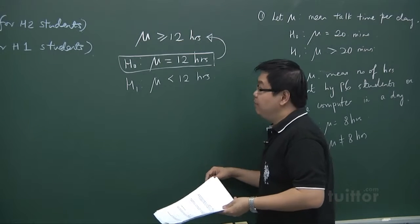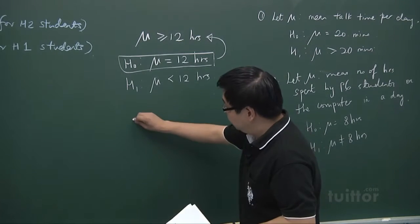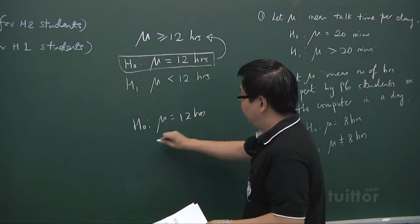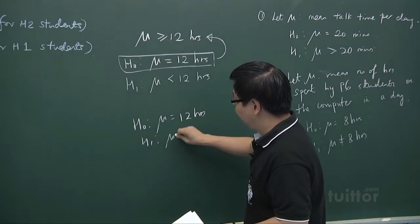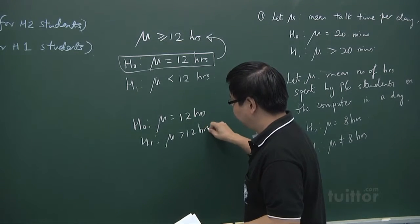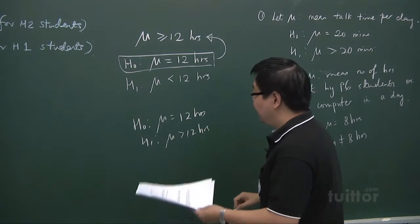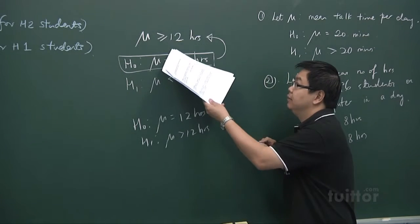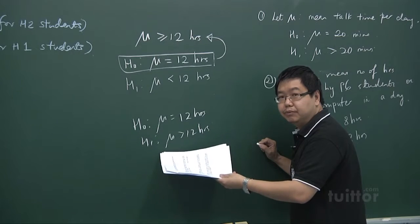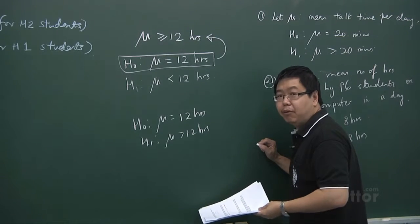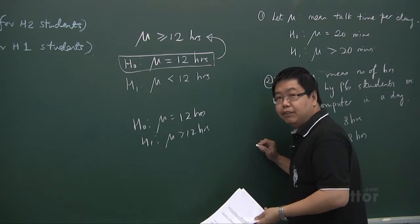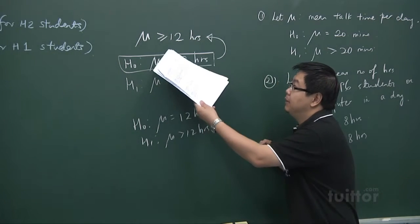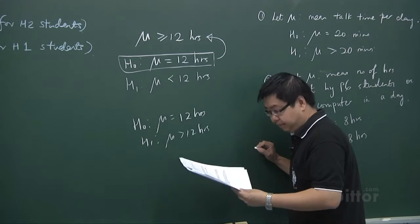Some people may think we should use H0: mu equals 12 and H1: mu greater than 12. But in that case, whether you accept H0 or H1, the doctor's claim would always be true — so that would never be a valid test. The doctor's claim would be forever true. Your aim of hypothesis testing is to test whether a person's claim is true or not.